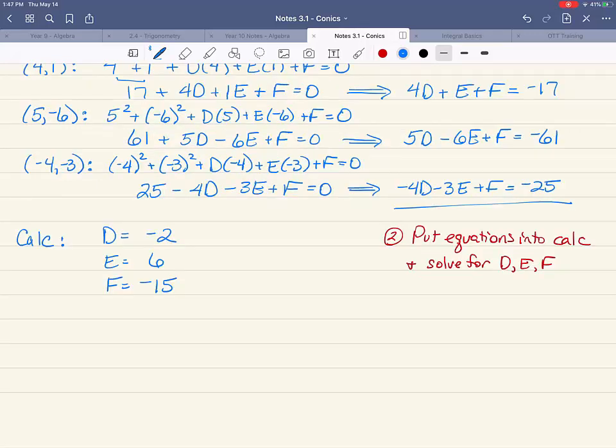Now, here are the answers that I got from the calculator. D equals negative two, e equals six, f equals negative fifteen.